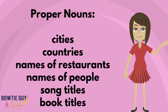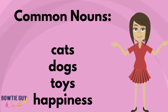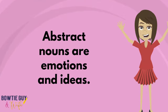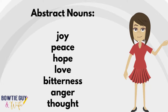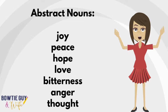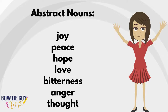Common nouns don't need a capital letter. We would never capitalize cats, dogs, toys, or the word happiness. Abstract nouns are my favorite. Abstract nouns are emotions and ideas. My teacher once told me that abstract nouns are nouns that we can't see or even touch. They might be words like joy, peace, hope, love, bitterness, anger, and thought. We can't see them, we can't touch them, but they're still nouns.